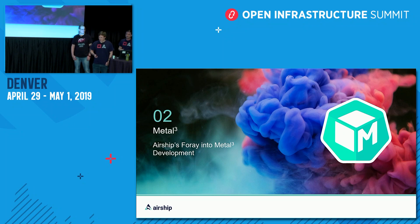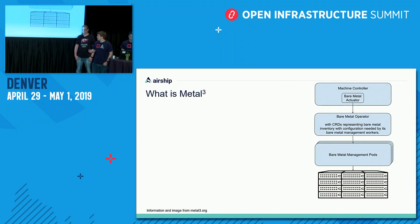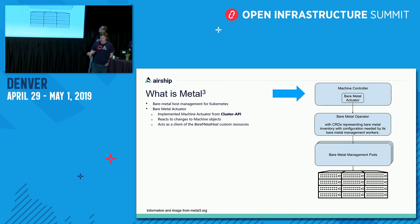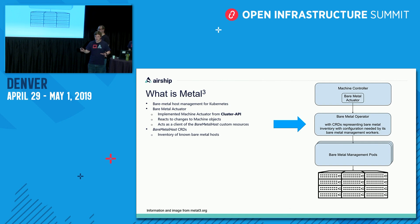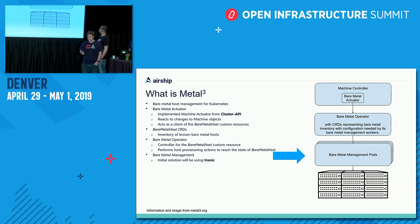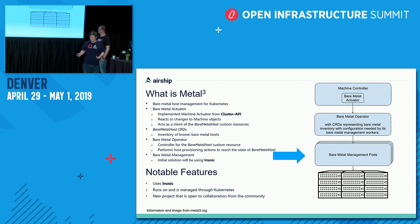So Airship is going to be moving towards Metal³. What is Metal³? You might have seen it at the keynote this morning with Chris's demo. Basically, it's bare metal host management for Kubernetes. It has a bare metal actuator implemented from the Cluster API, which watches a new bare metal host custom resource that keeps an inventory of all the bare metal hosts and nodes you want to create. The bare metal operator does the actual provisioning work, trying to keep the state of the bare metal matching what's defined in the bare metal host custom resource. Their initial implementation will use Ironic, which is great for us because we're very interested in Ironic, and it's a new project that's open to collaboration.